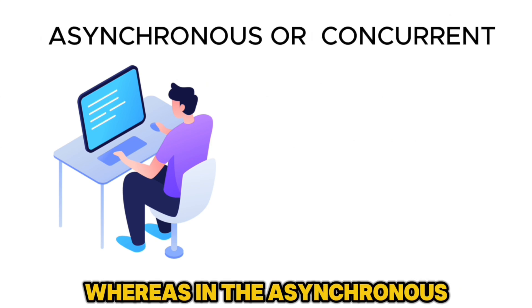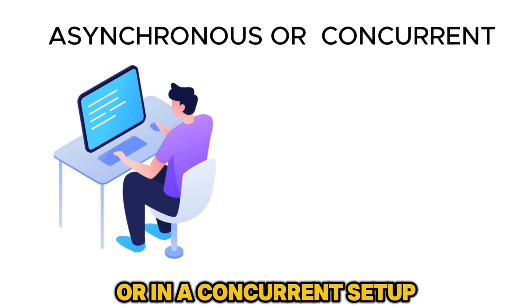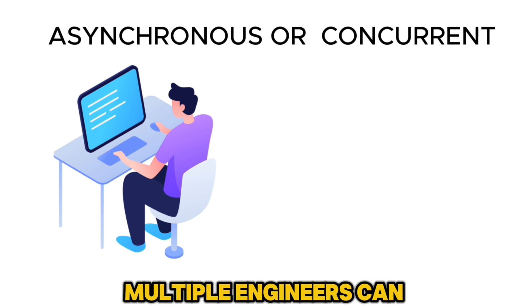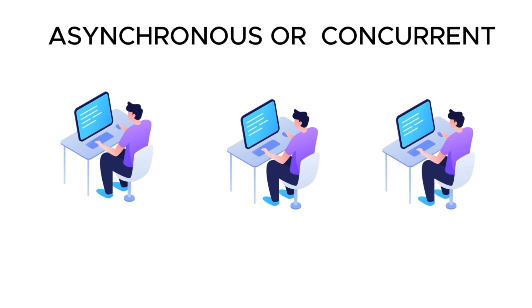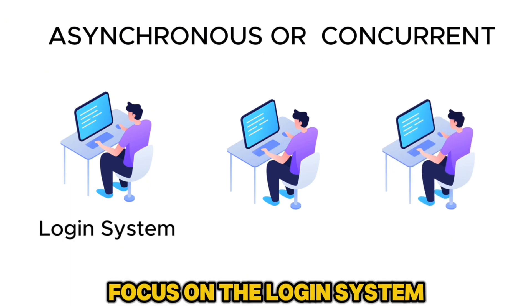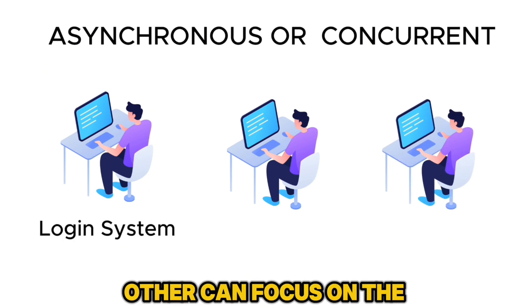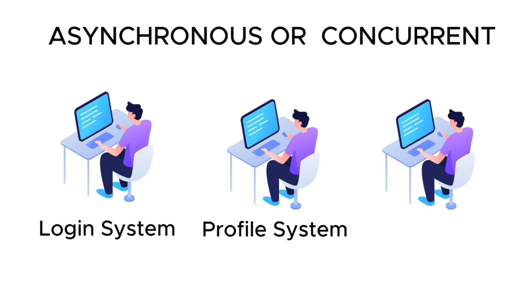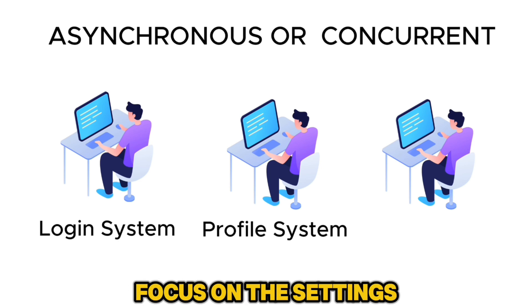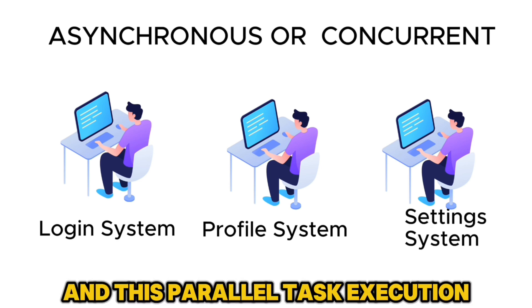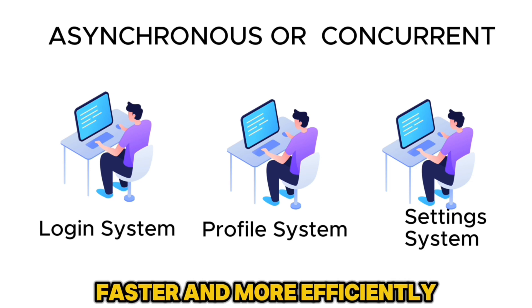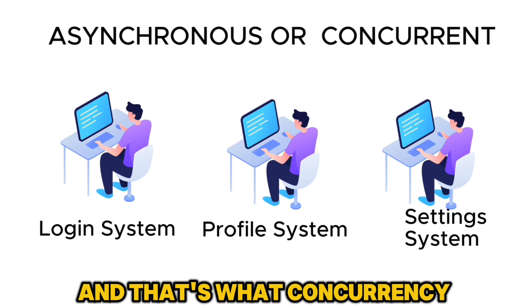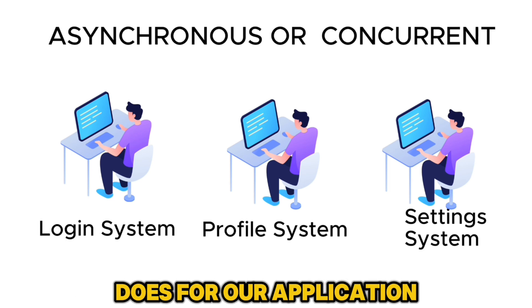Whereas in the asynchronous, or concurrent setup, multiple engineers can work on different features simultaneously. One engineer can focus on the login system, another can focus on the user profile, and another one can focus on the settings. This parallel task execution allows the team to complete the project faster and more efficiently. And that's what concurrency does for our application.